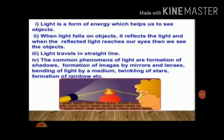Light is a form of energy which helps us to see objects. When light falls on objects, it reflects the light, and when the reflected light reaches our eyes, then we see the objects. The common phenomena of light are formation of shadows, formation of images by mirrors and lenses, bending of light by a medium, twinkling of stars, formation of rainbow, etc.